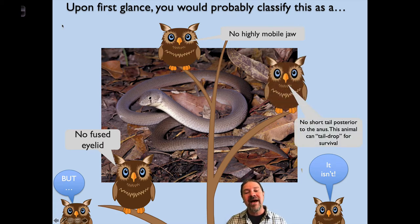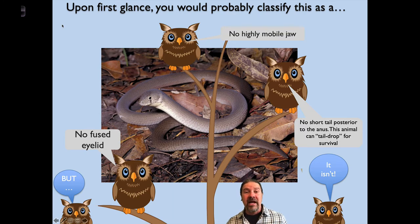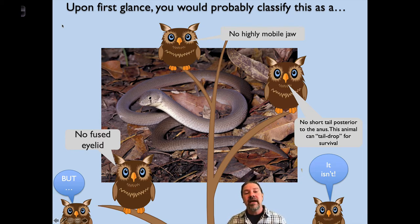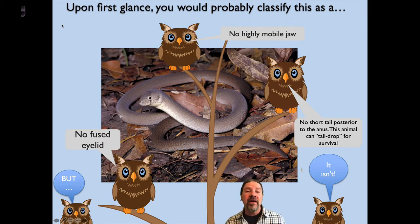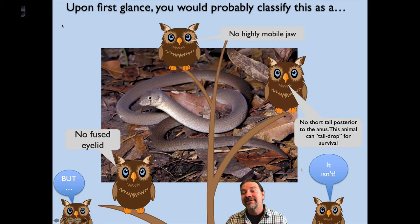Lastly, this animal does not have a short tail posterior to its anus — meaning it has a long tail posterior to its anus. When threatened, this animal can actually consciously drop its tail, causing it to wriggle around while it escapes. Whatever is after it might settle for the smaller snack of the tail that's not moving as fast. This is not a snake — this is what we call a legless lizard.